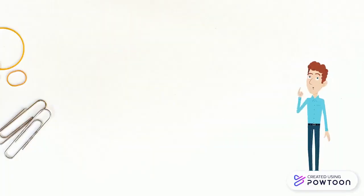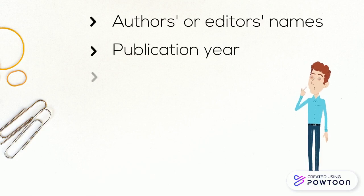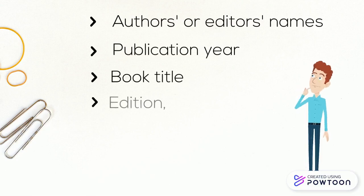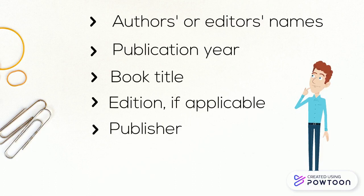First, gather your information. You'll need authors or editors' names, publication year, book title, edition if applicable, publisher, a DOI or digital object identifier if available. This mostly applies to ebooks and we'll talk about this more later.